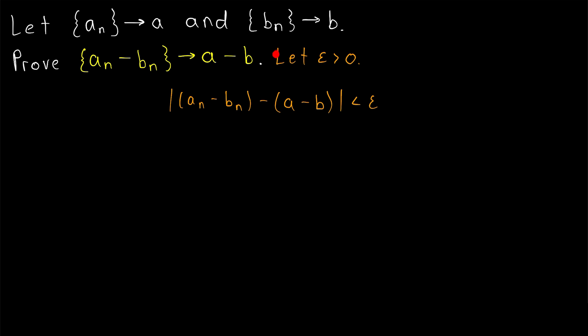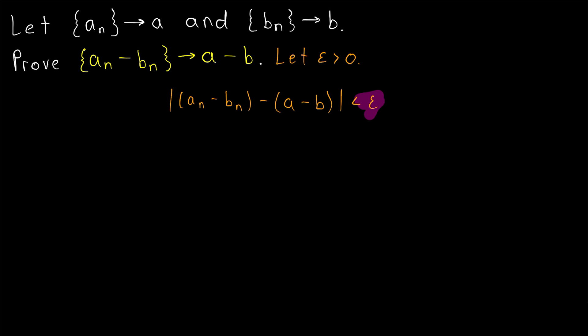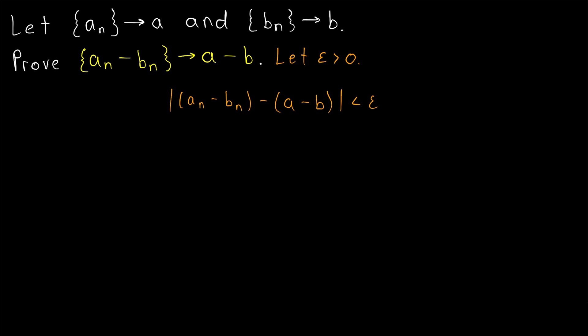In our proof, we'll take an arbitrary epsilon greater than 0, and we'll want to show that the distance between terms of our sequence and what we hope the limit is — a minus b — is less than epsilon. In order to show that this is less than epsilon, we want to think about what we can control, what we can make arbitrarily small.